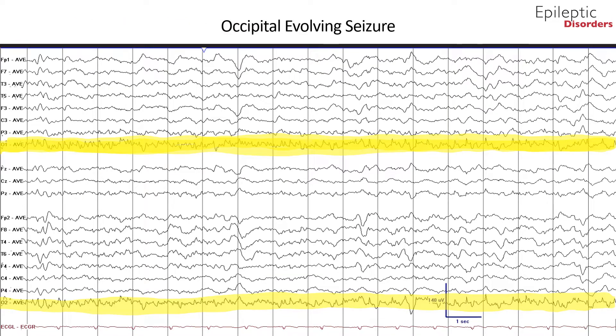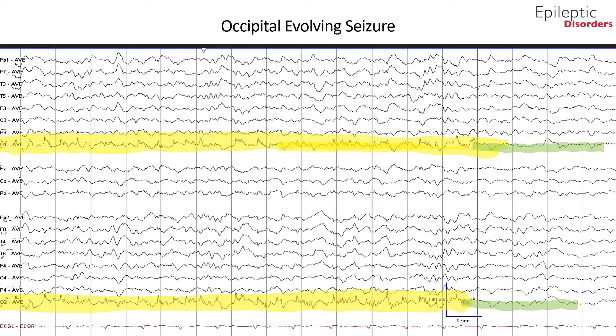The second page of the average montage shows further evolution of the occipital seizure with increase in sharp wave activity in the theta and alpha range frequency over the O1 and O2 channels. The location remains localized in the O1 and O2 region without significant spatiotemporal evolution. In the last page shown in average montage, the field remains focal involving mainly the posterior occipital O1 and O2 channels with further evolution in morphology and frequency — appearing slower in frequency with higher, more spiky complexes. There is additional post-ictal slowing noted over the O1 and O2 channels highlighted in green.